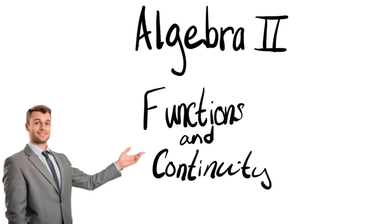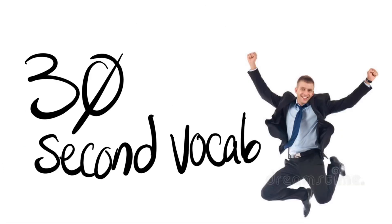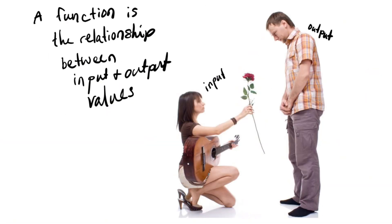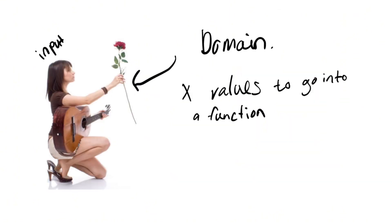Algebra 2 functions and continuity in 5 minutes or less. 30-second vocab. A function is the relationship between input and output. The domain, or input, is the x values that go into a function.